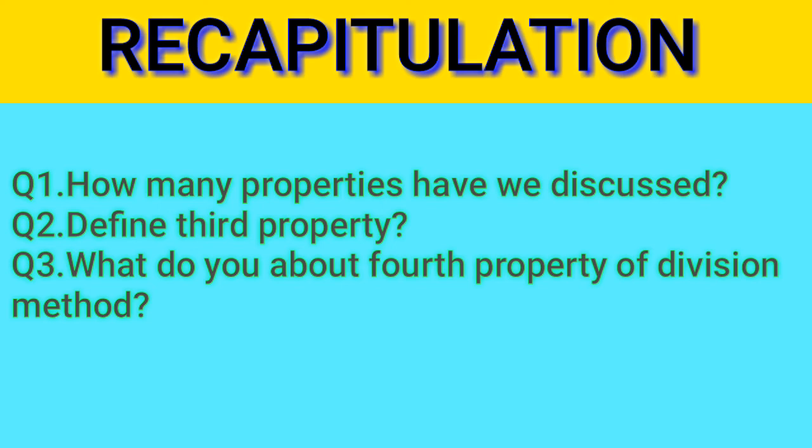In the last recapitulation — question number one: how many properties have we discussed? We have discussed two properties. Question number two: define the third property. If a number is a factor of two or more given numbers, then it is a factor of their sum. Question number three: what is the fourth property? If a number is a factor of two given numbers, then it is also a factor of their difference. I hope that you have understood all properties. Take care, Allah Hafiz.